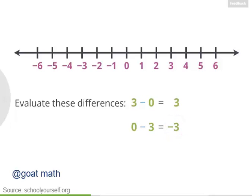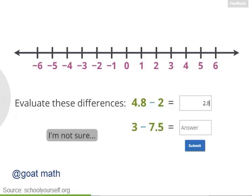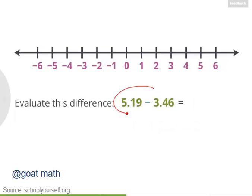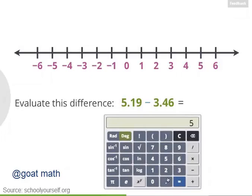Next, let's look at some decimals. What's 4.8 minus 2? And what's 3 minus 7.5? 4.8 minus 2 equals 2.8. And 3 minus 7.5 equals negative 4.5. The more decimals you have, the trickier the subtraction can get. For example, what's 5.19 minus 3.46? We can use the calculator to work out the answer: 5.19 minus 3.46 equals 1.73.